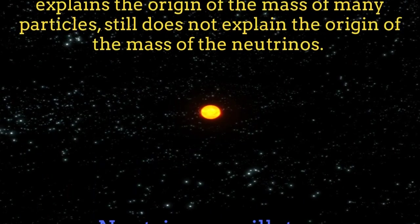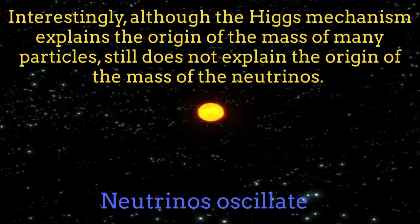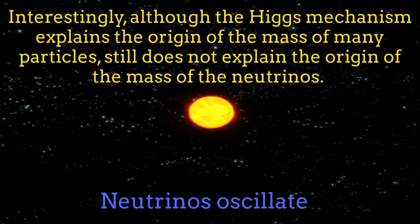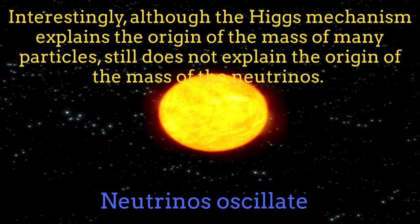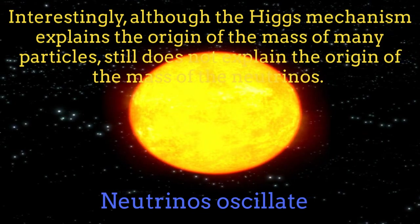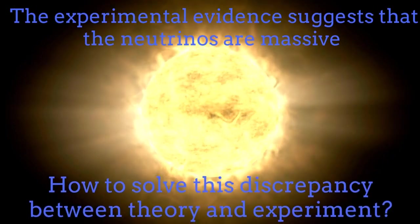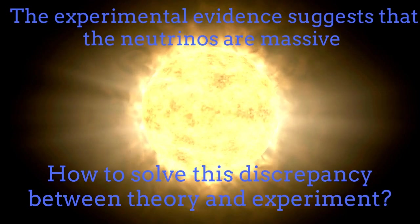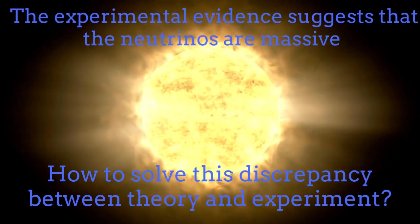Although the electroweak theory is one of the biggest achievements of the theoretical particle physics, this successful Higgs mechanism, able to give mass to the bosons Z and W, still is not able to give mass to the neutrinos. However, the experiments have proved that the neutrinos are indeed massive and that they oscillate. How to solve this discrepancy between theory and experiment? We will discuss about this issue in future episodes.